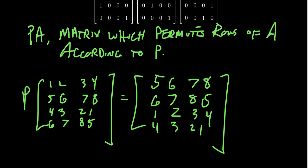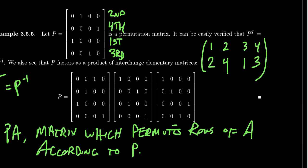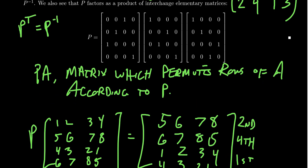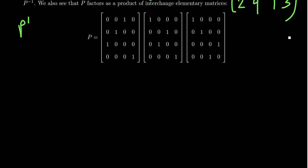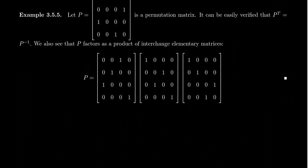So multiplying by the permutation matrix scrambles the rows of A the same way the identity was scrambled: the second row appears first, the fourth row second, the first row third, and the third row fourth — consistent with the permutation of P. If you multiply the other way, A times P, the effect is that you permute the columns of A. So: multiplying on the left affects rows, multiplying on the right affects columns.